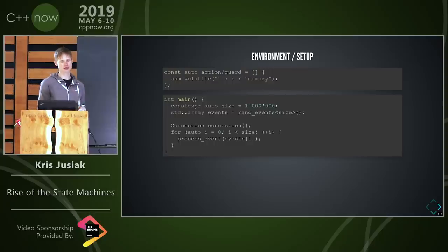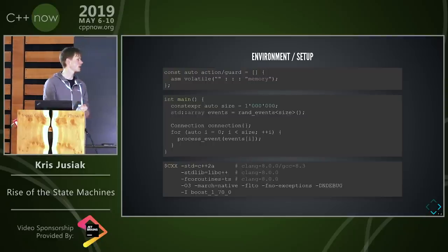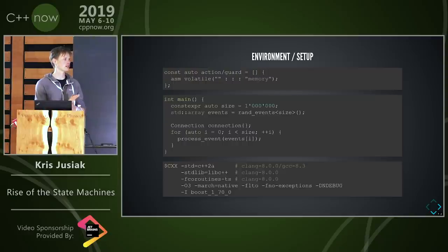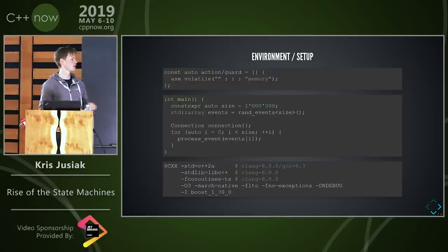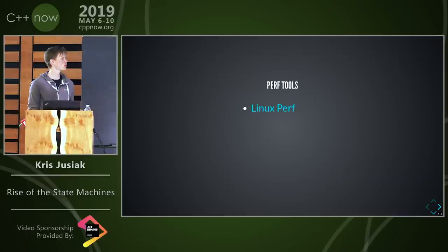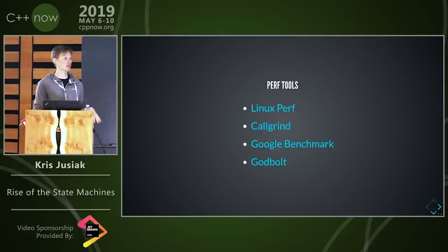We'll use the newest compilers available, the O2 flag, and compare mostly with Clang since coroutines are implemented there. The tools used: Linux perf, Callgrind, Google Benchmarks, and Godbolt. If you haven't used any of them, I really advise you to — they're really helpful to have in your toolkit.